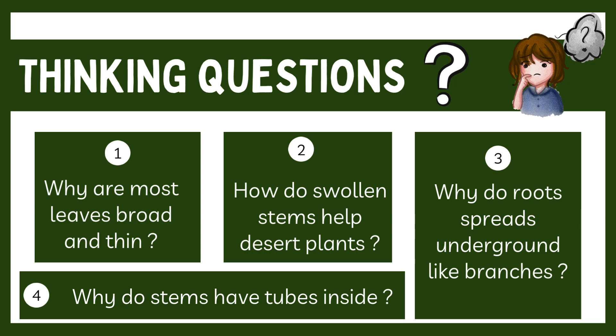The second question: how do swollen stems help desert plants? Swollen stems store water, helping desert plants survive in dry conditions. Next question: why do roots spread underground like branches? Roots spread out to absorb more water and keep the plant stable — that's why they spread underground like branches.